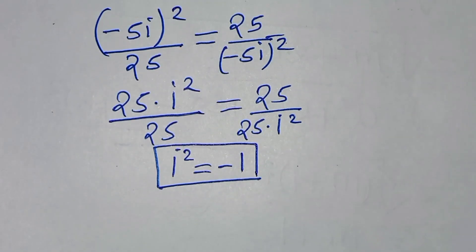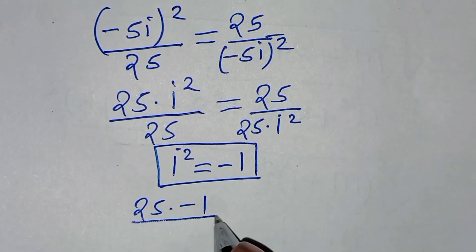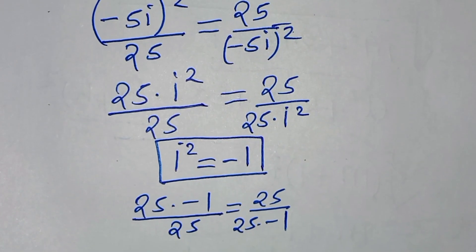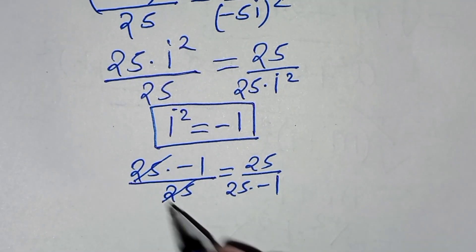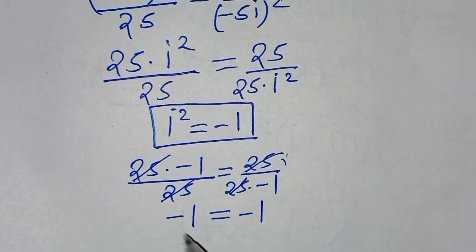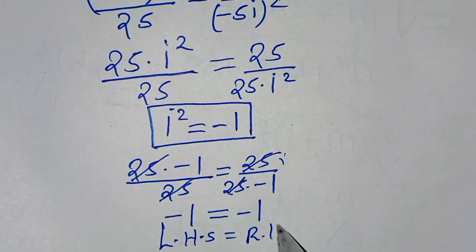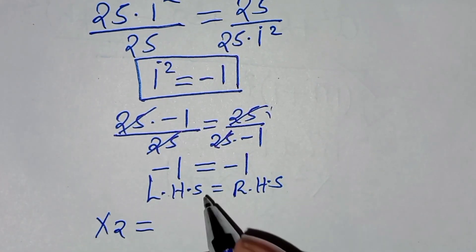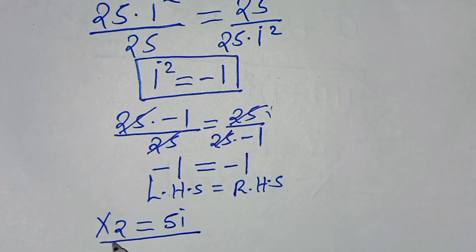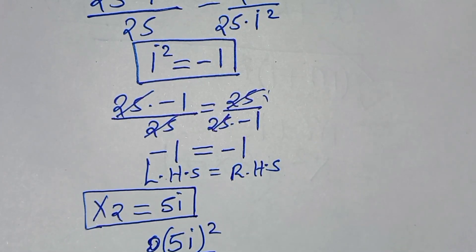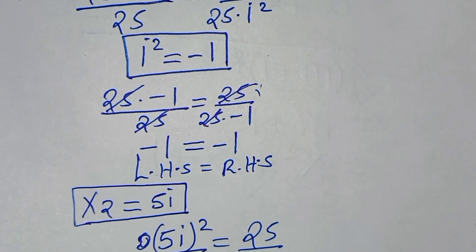Substituting i squared as minus 1, we have 25 times minus 1 divided by 25, equal to 25 divided by 25 times minus 1. Simplifying by 25 on both sides gives minus 1 equal to minus 1, so the left-hand side equals the right-hand side. For x₂ equal to 5i: we have 5i squared divided by 25, equal to 25 divided by 5i squared. This gives 25 times i squared divided by 25, equal to 25 over 25 times i squared.